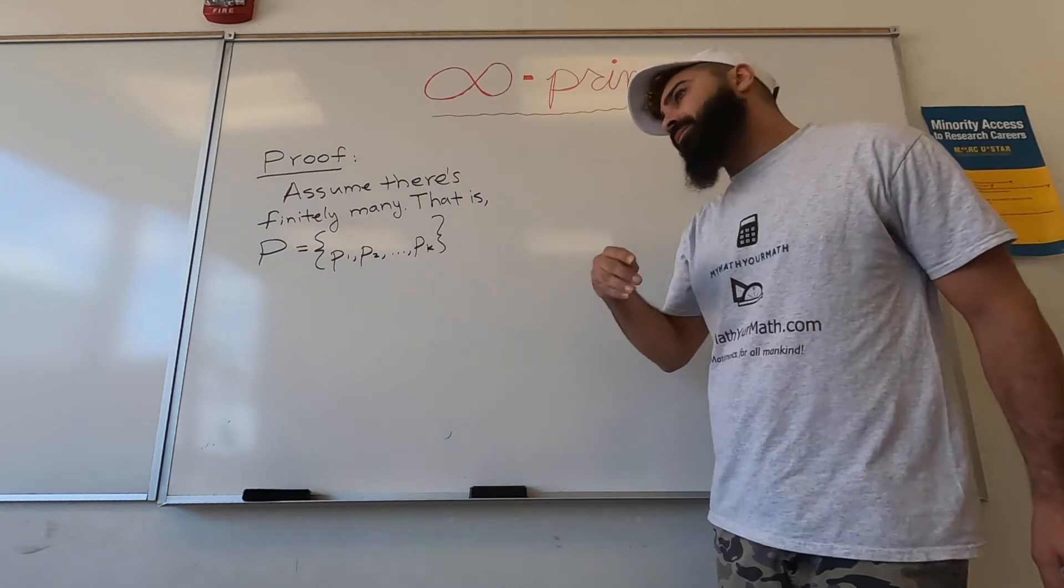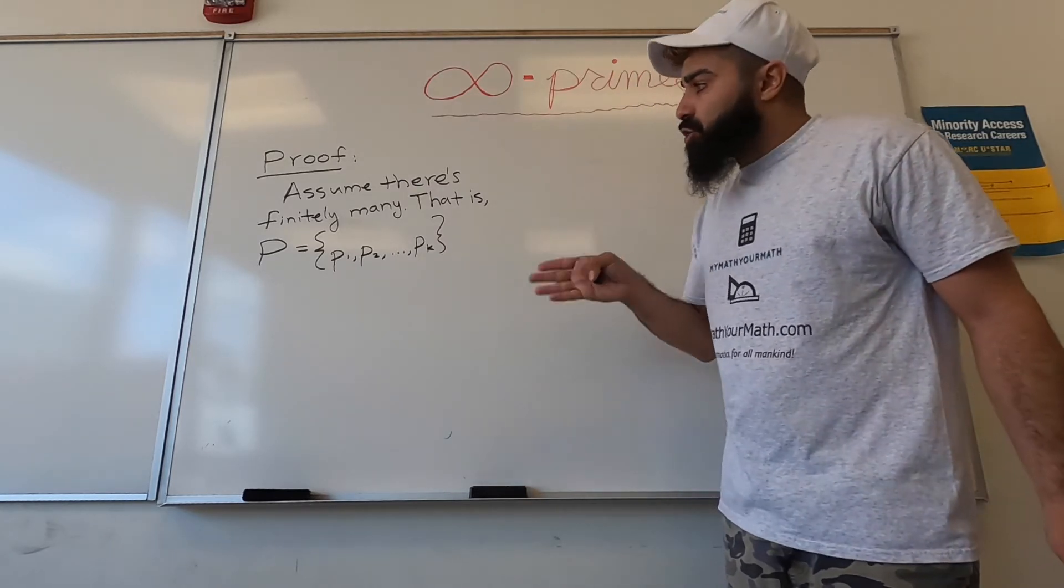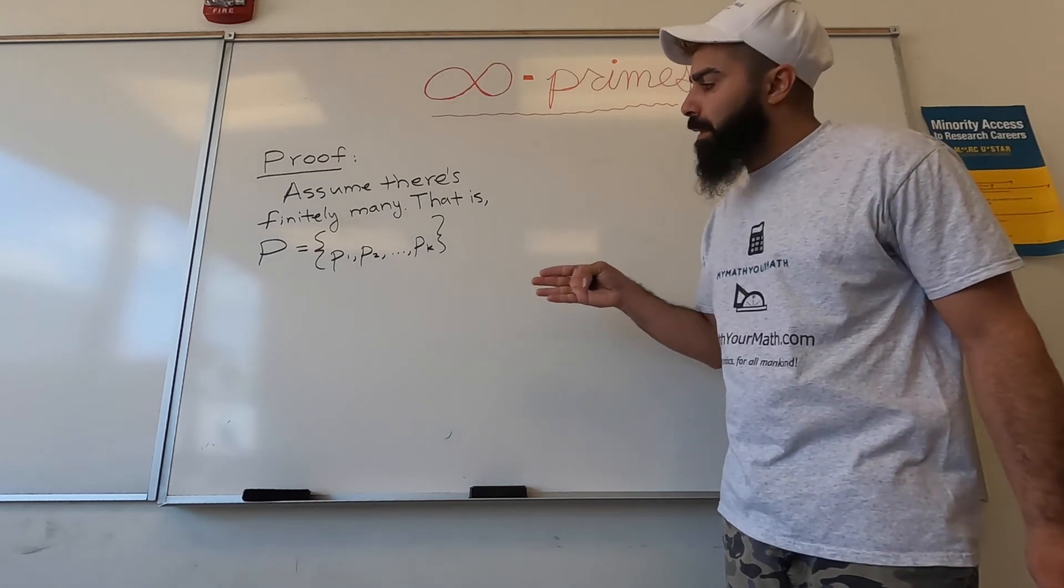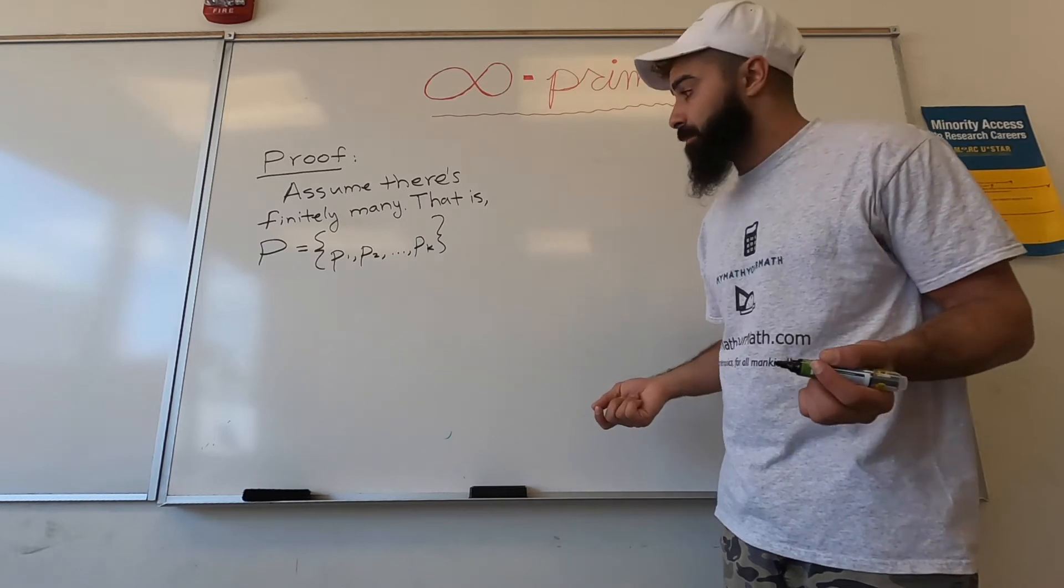K could be a million and two, so there's a million and two primes. But we're going to assume for now that the number of primes in the world is finite. There's not infinitely many. We're going to want to come up with a contradiction.